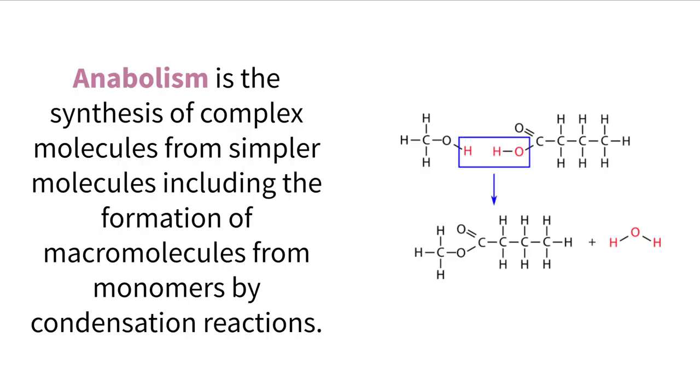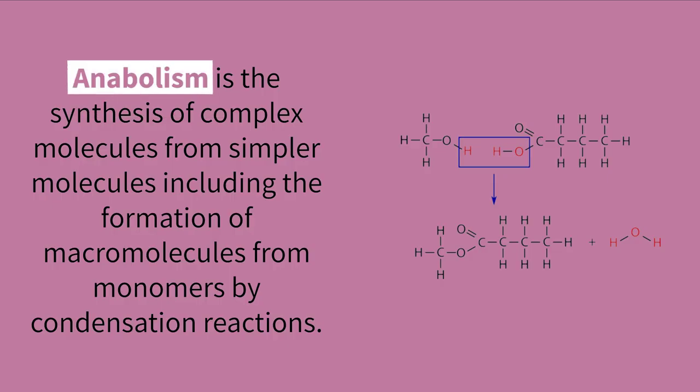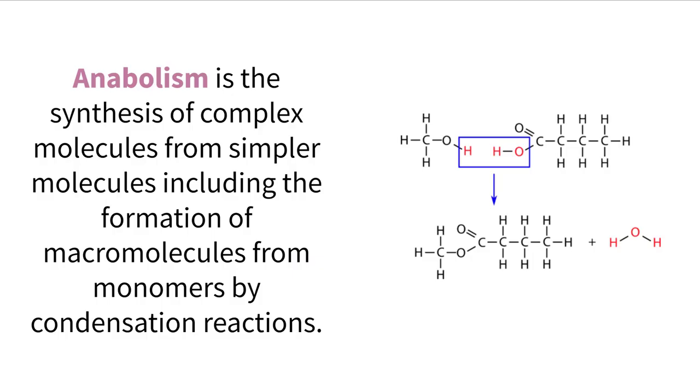Metabolism can be broken down into two general processes. The first one, anabolism, describes how smaller, simple molecules can be chemically bound together to build larger, more complex molecules. This anabolism process, in relation to building large organic molecules, occurs through a specific type of reaction called a condensation reaction.